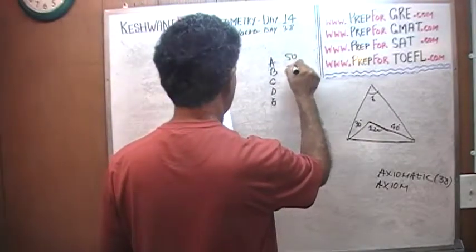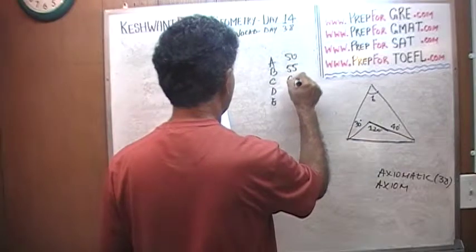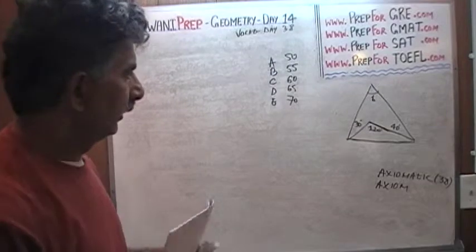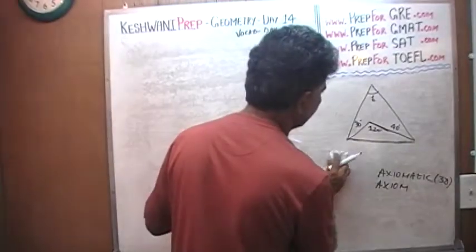50, 55, 60, 65, 70. That makes your life simple. I'm going to redraw this picture one more time.